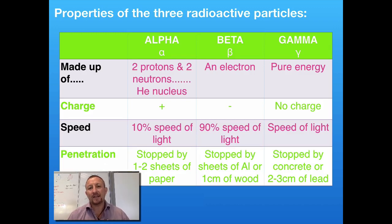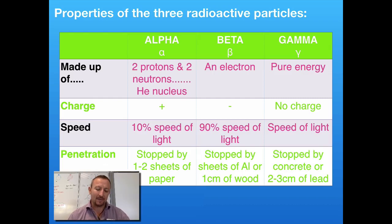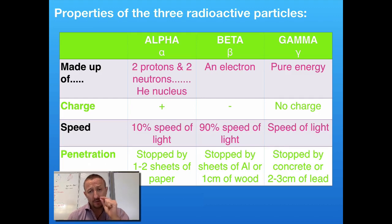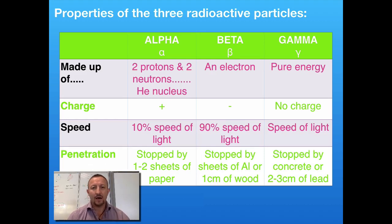The beta particle is predominantly an electron, so it virtually has no mass — it's so small that it's unaffected when we're looking at it with respect to atoms. In the size of an atom, it's tiny. It has a negative charge and it's travelling at 90% the speed of light — a lot faster than the alpha particle. So we've got a small, negatively charged, fast-moving particle. As we know, it can be stopped by a couple of sheets of aluminium or by a thick centimetre of wood.